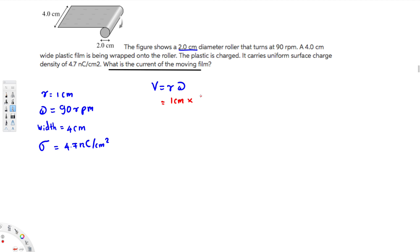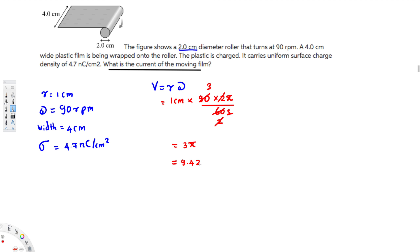To convert: 90 revolutions per minute times 2π radians per revolution, divided by 60 seconds per minute. We can simplify — cancel 90 and 60 by 30 to get 3, then cancel the remaining 2, giving us 3π. Plugging this into the calculator along with the one centimeter radius, we get approximately 9.425 centimeters per second for our tangential velocity.